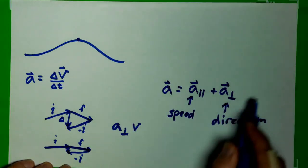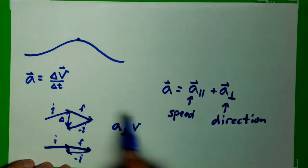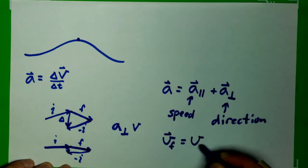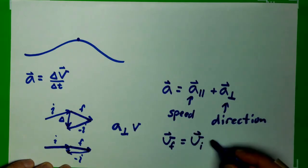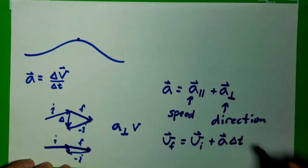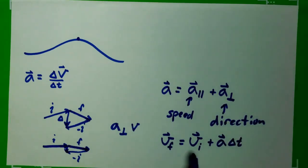That becomes a very powerful idea when we plug it back into here. We can get our final velocity as a vector is equal to our initial velocity as a vector, plus our acceleration times our time period. And so now I can talk about, well, the velocity final is broken up into two pieces, and this is broken up into two pieces.